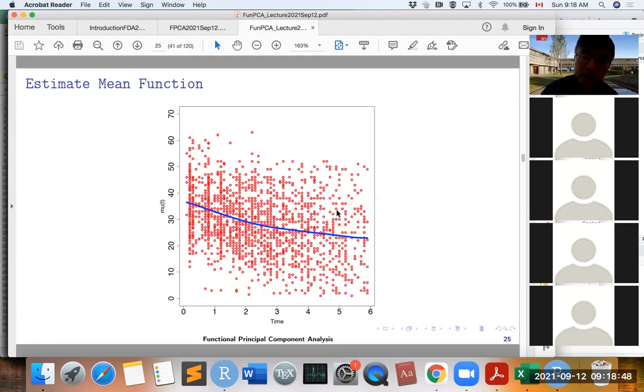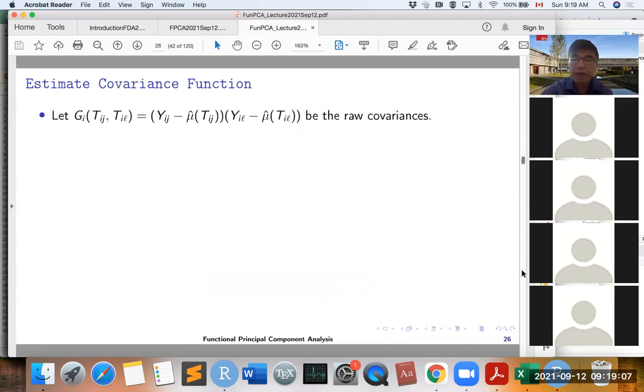After we get this μ(T), after we pool all the data together, we can do any non-parametric regression method to do it, like local polynomial regression. We can estimate μ(T), and we can estimate the covariance function.